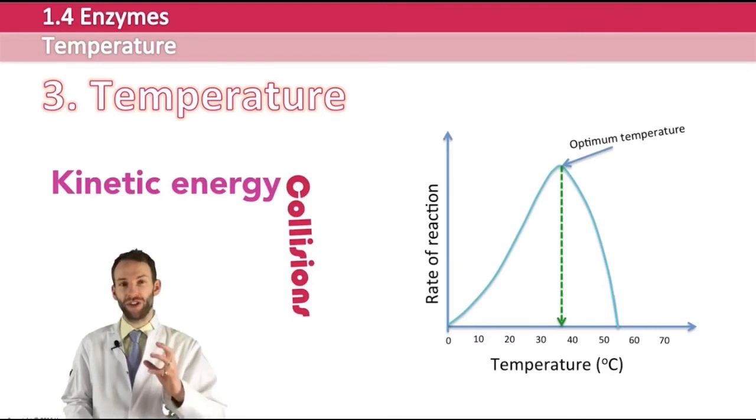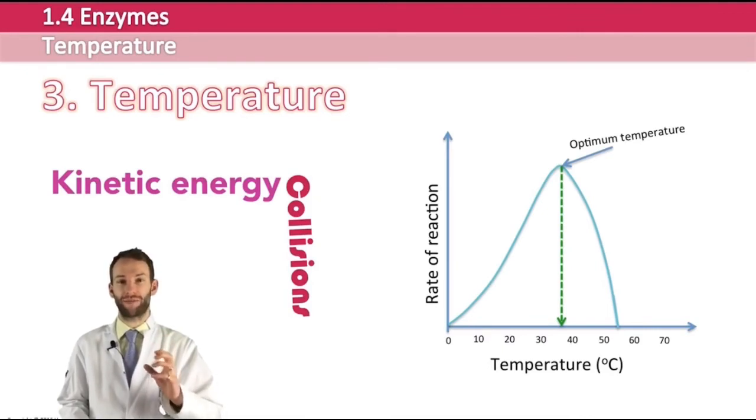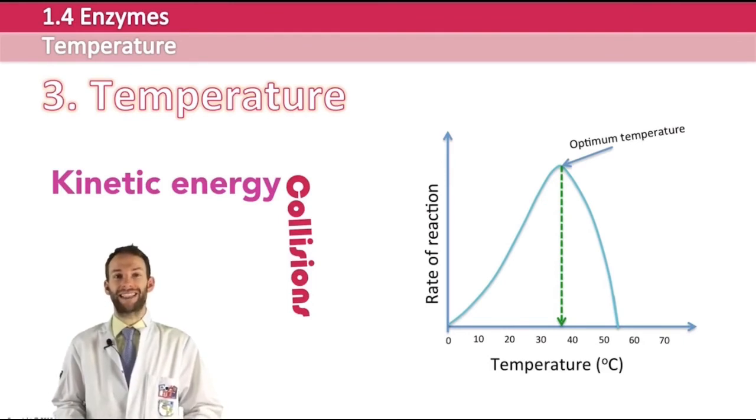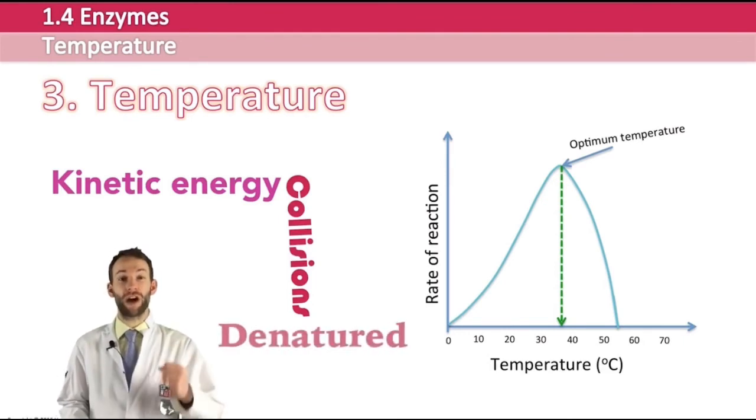It will stop being able to catalyze reactions, and very quickly, as you can see by the graph, the rate of reaction decreases back all the way down to zero as denaturation occurs. This is a permanent change to the enzyme - it's not reversible. You cannot go back once the enzymes have become denatured.